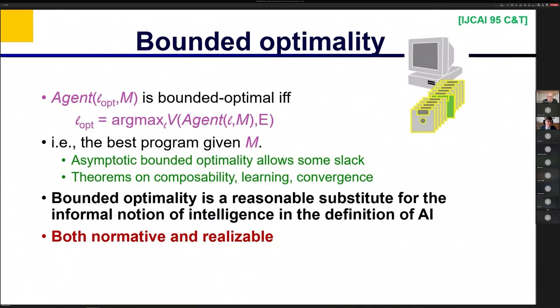So unlike perfect rationality, which is normative and not realizable, this notion is, and there's some quite interesting theory allowing you to, for example, compose bounded optimal systems within a given computational skeleton to optimize the allocation of computational resources, to learn how to be bounded optimal, and prove that a given learning method converges to a bounded optimal solution in the limit.